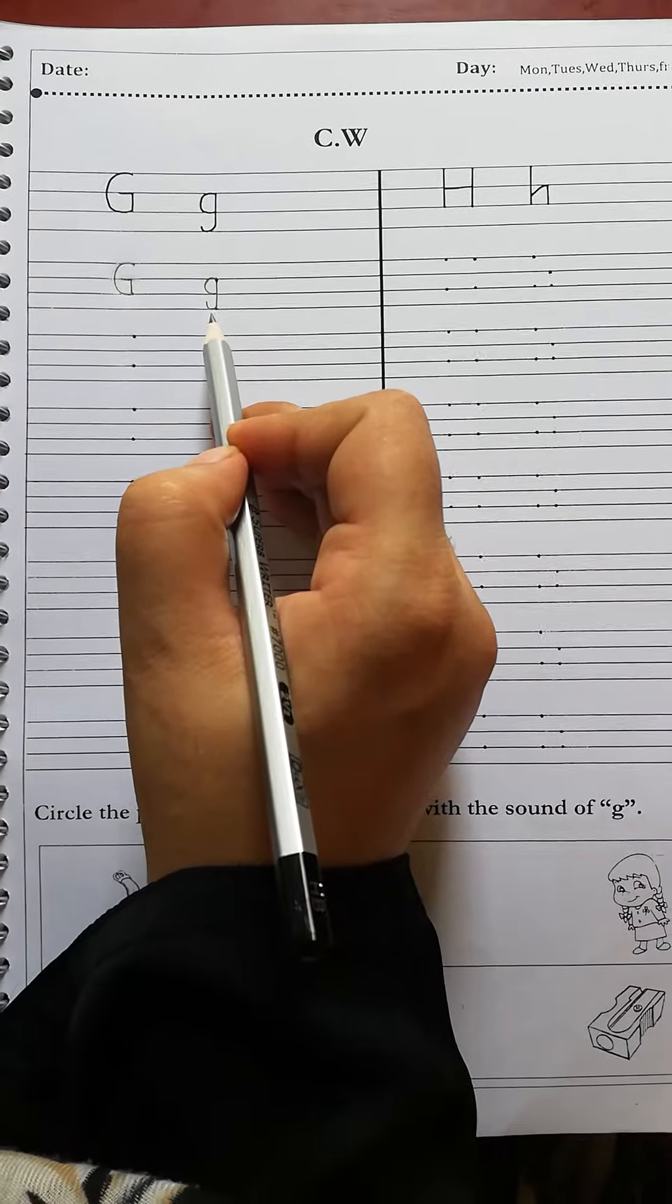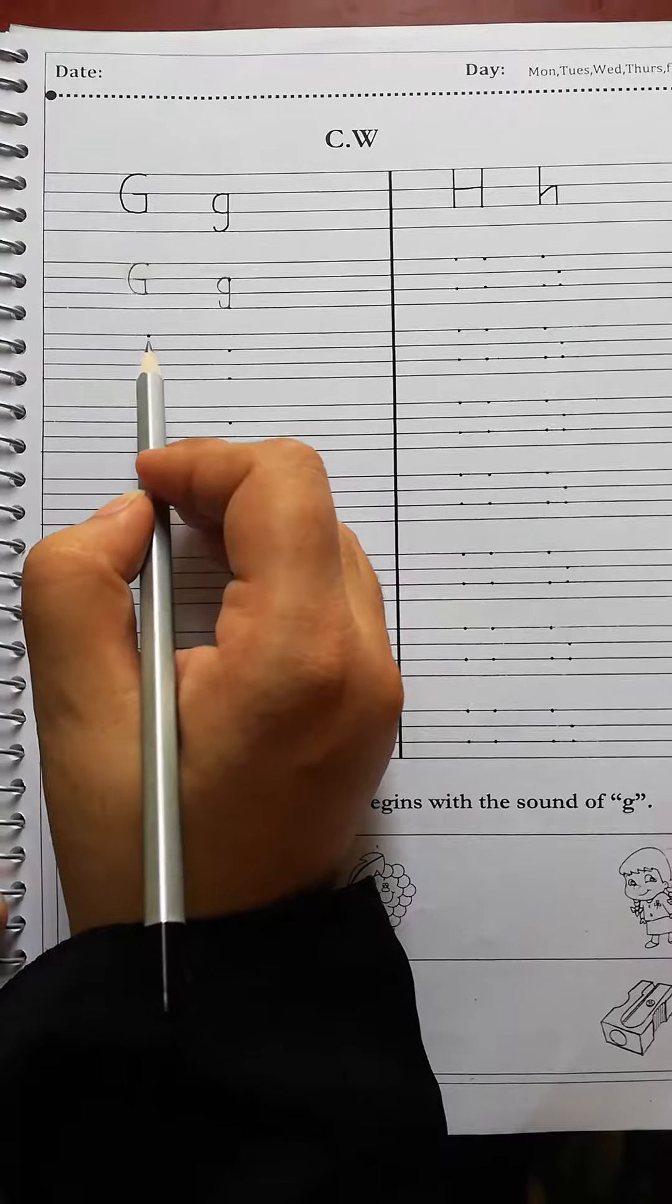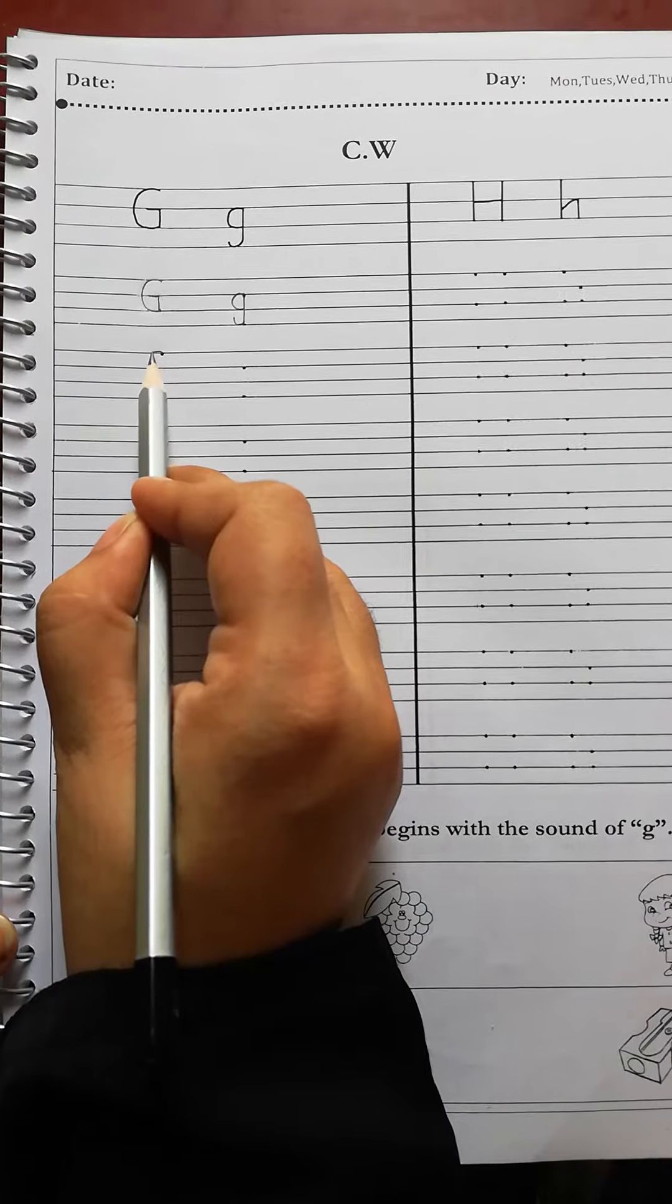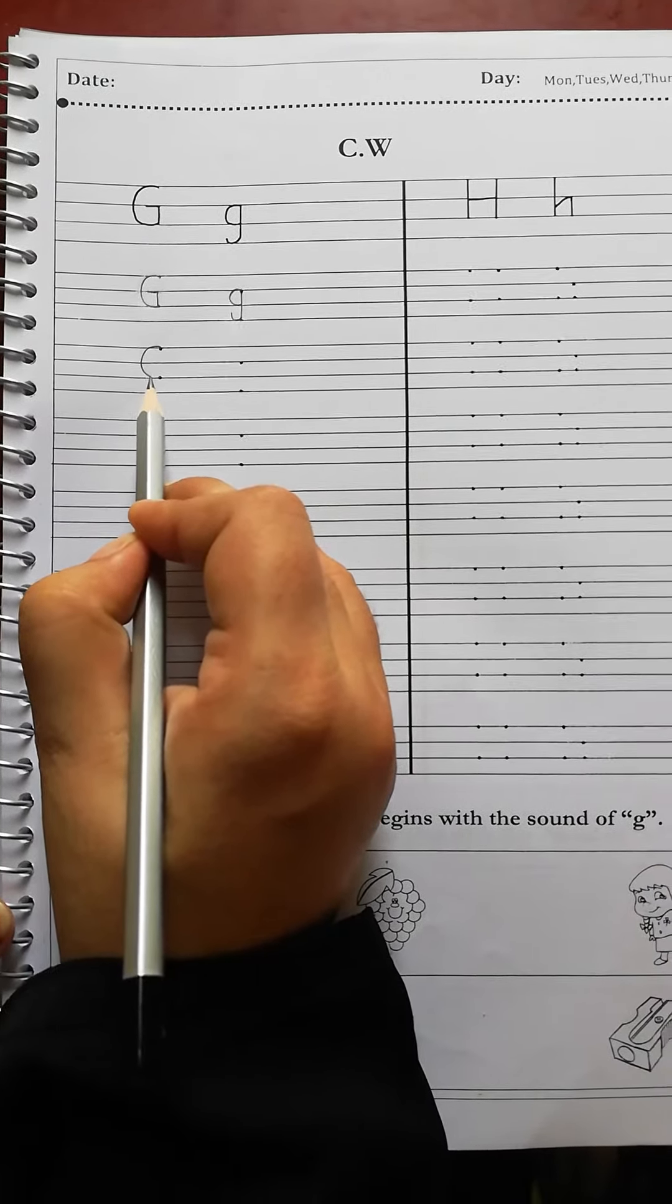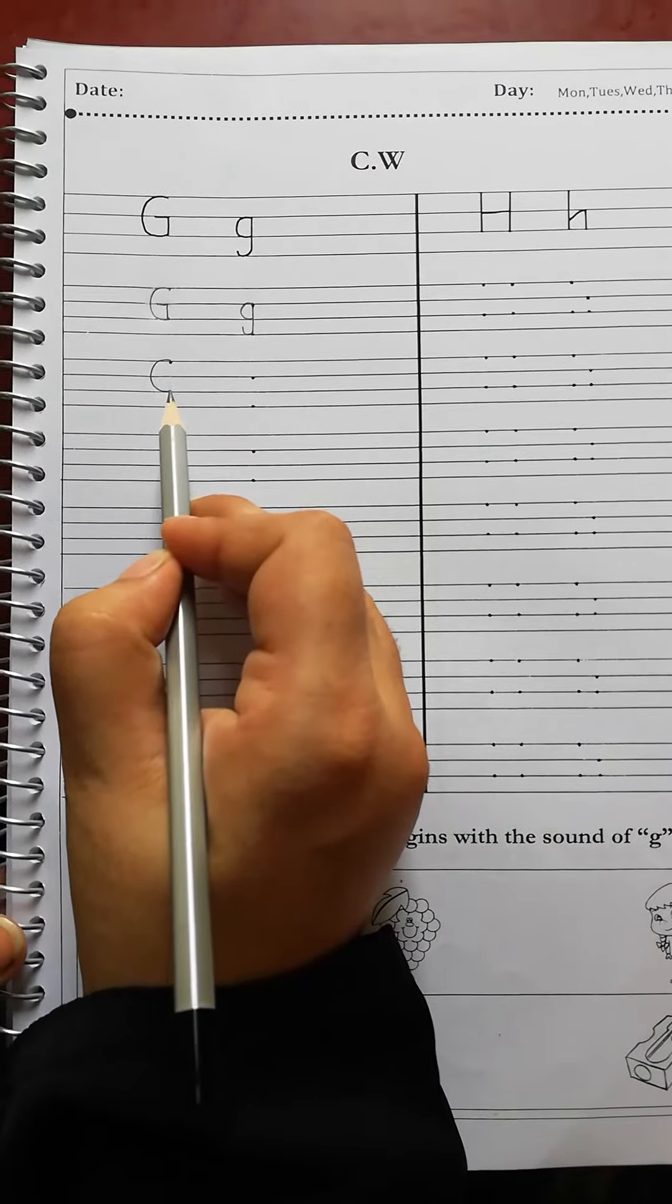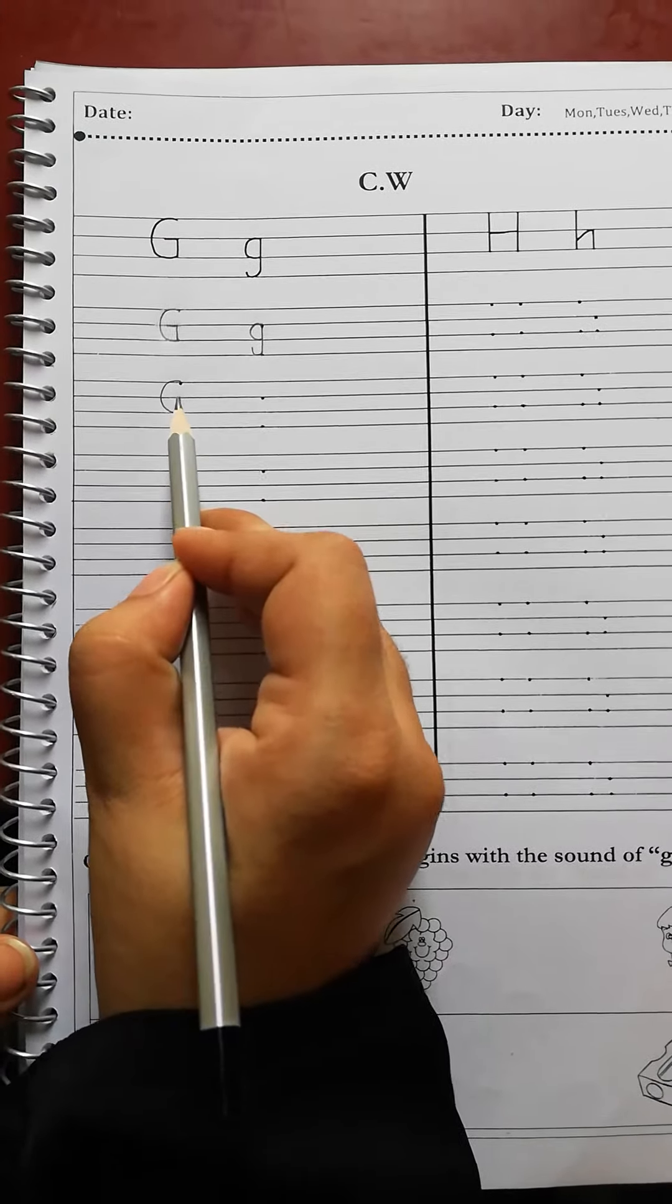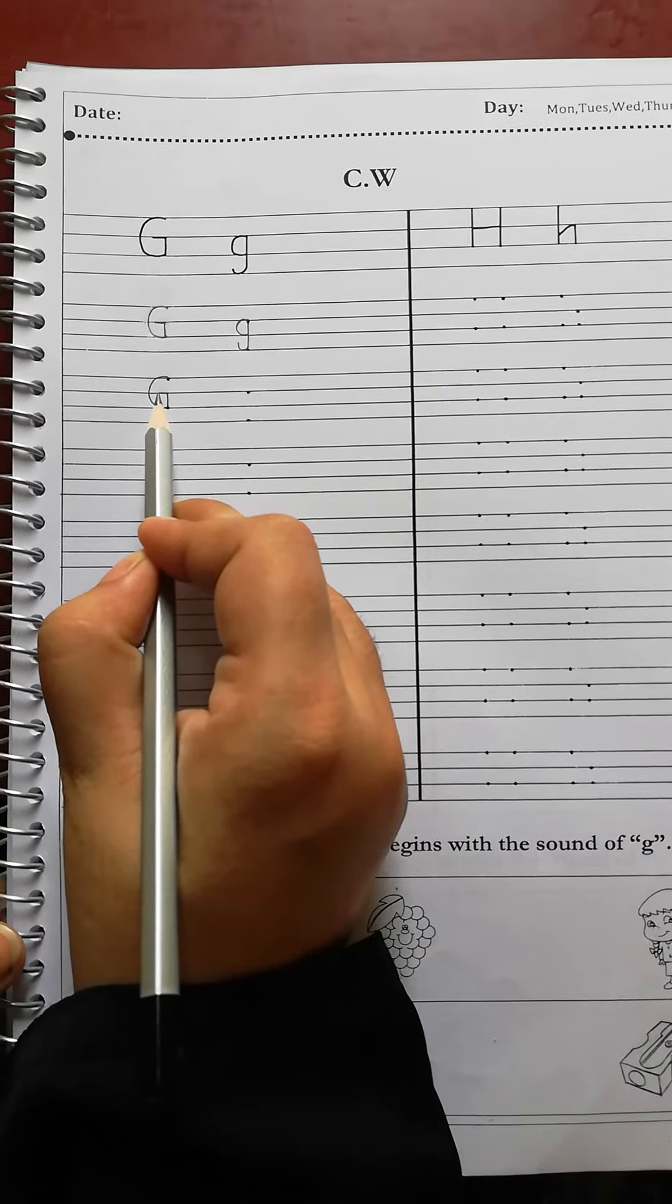Students, when we write capital G, first we put the pencil on the top dot and make a round belly backwards like C to the second dot. Then from here, we bring the pencil up to the second line and make a small line forward. This is capital G.